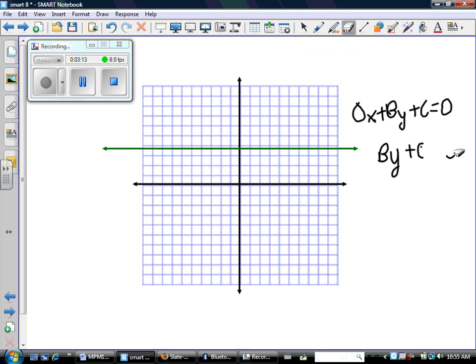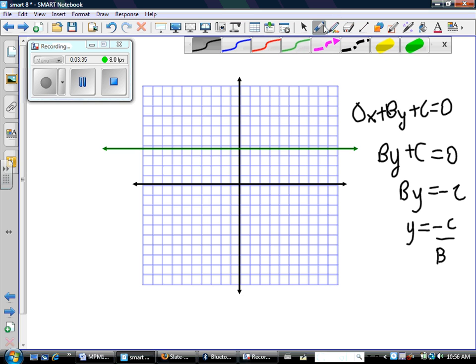Okay, so there's my equation, and again I can simplify it down into just a y equals equation. So there it is, it's a y equals equation. Negative C over B is the value of y.